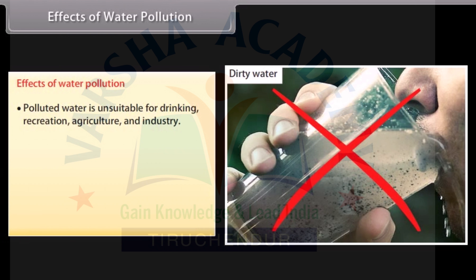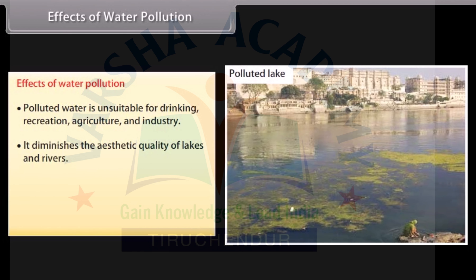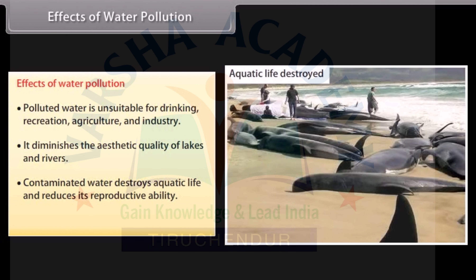Polluted water is unsuitable for drinking, recreation, agriculture and industry. It diminishes the aesthetic quality of lakes and rivers. Contaminated water destroys aquatic life and reduces its reproductive ability. It is also hazardous to human health.